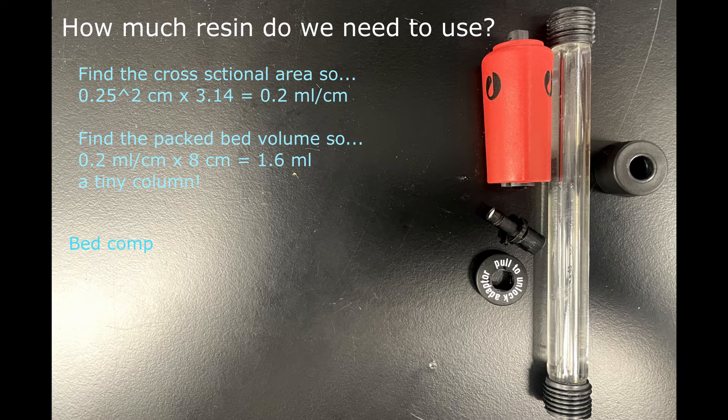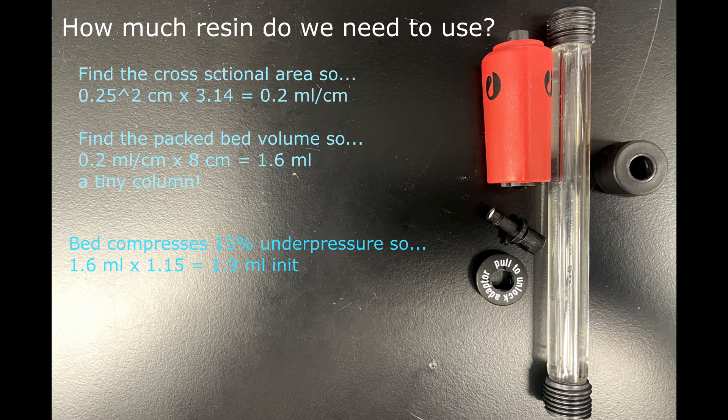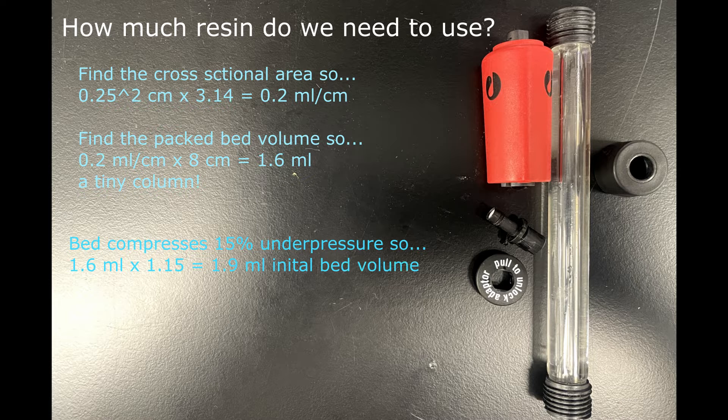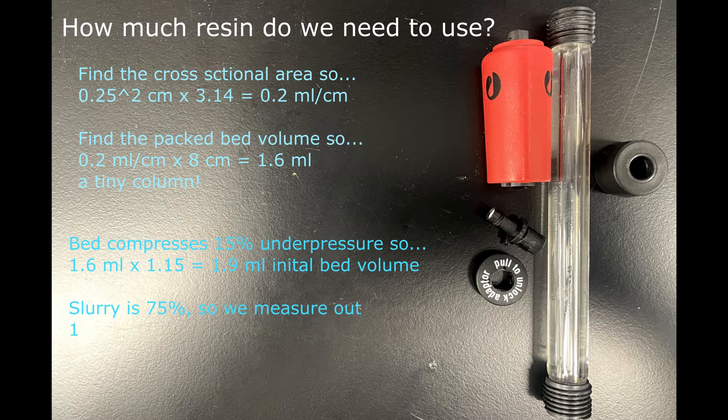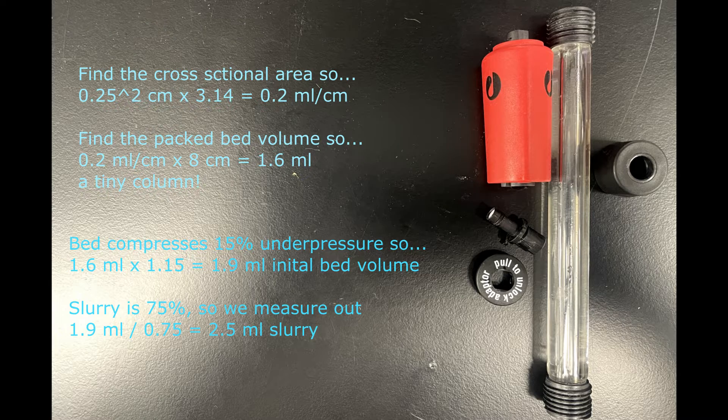Now it's a guess, but the bed tends to compress about 15% under pressure, so we're going to multiply 1.6 times 1.15, which will give us an initial unpacked bed volume of 1.9 mils. Since the slurry is a 75% slurry, we're gonna divide 1.9 by 0.75, which means we need to measure out about 2.5 mils of slurry.